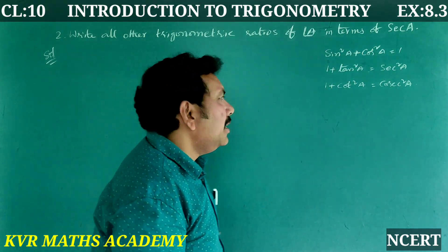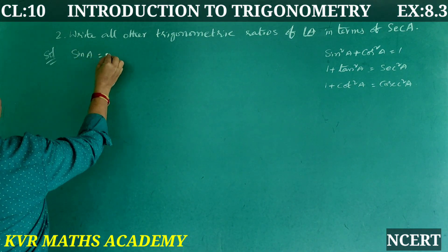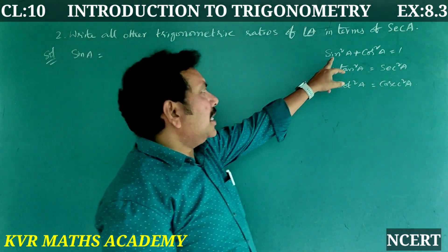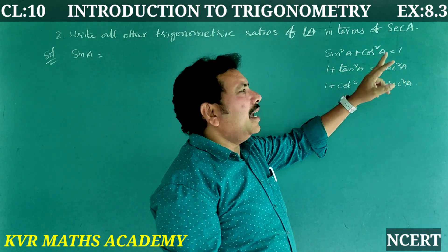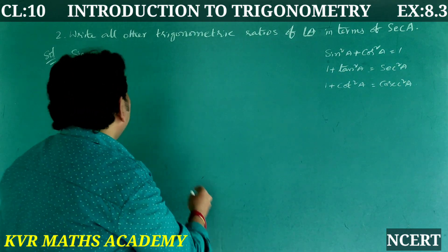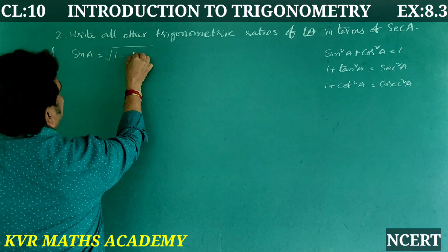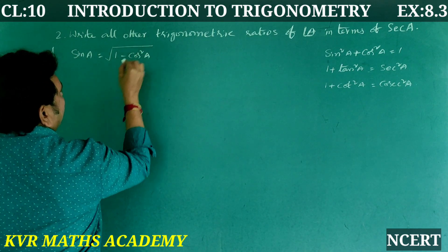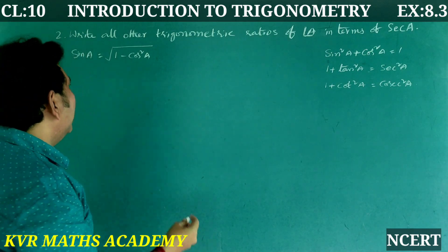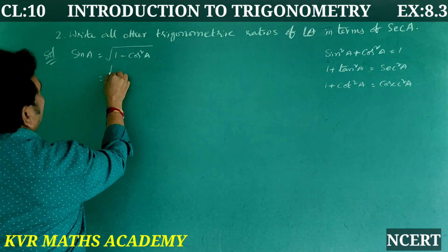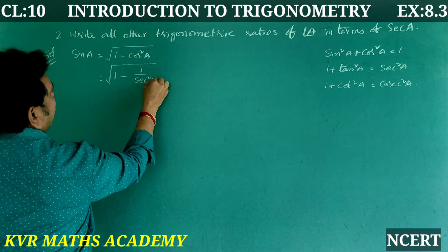First, sin A: sin²A = 1 − cos²A, so sin A = √(1 − cos²A). Since cos A is the reciprocal of sec A, cos A = 1/sec A, so sin A = √(1 − 1/sec²A).